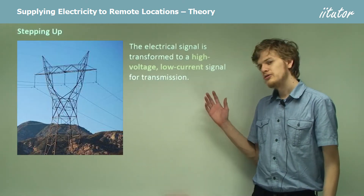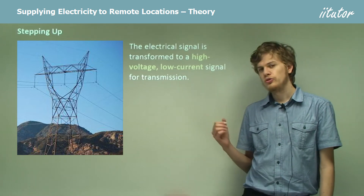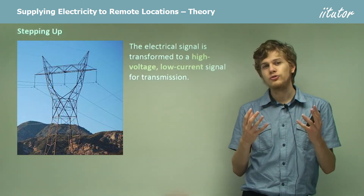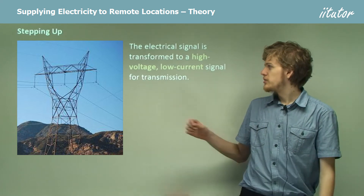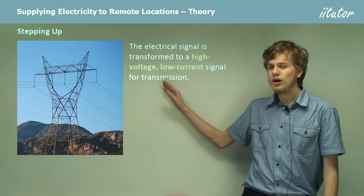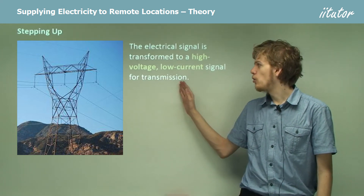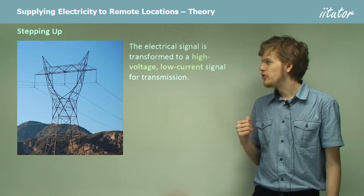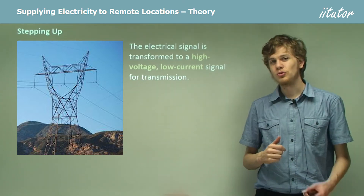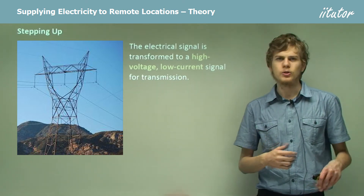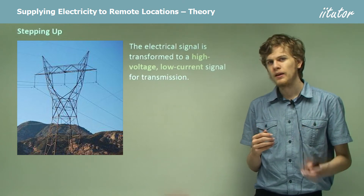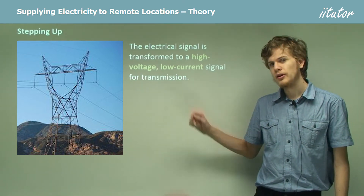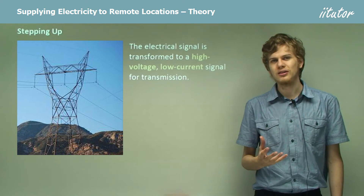The electrical signal is transformed to a signal that has a few particular attributes to it. We say that the signal is a very high voltage signal and a very low current signal. You're probably familiar with the terminology 'high voltage' when talking about things like high voltage power lines, but probably not so familiar with low current — we'll get to that a bit later.